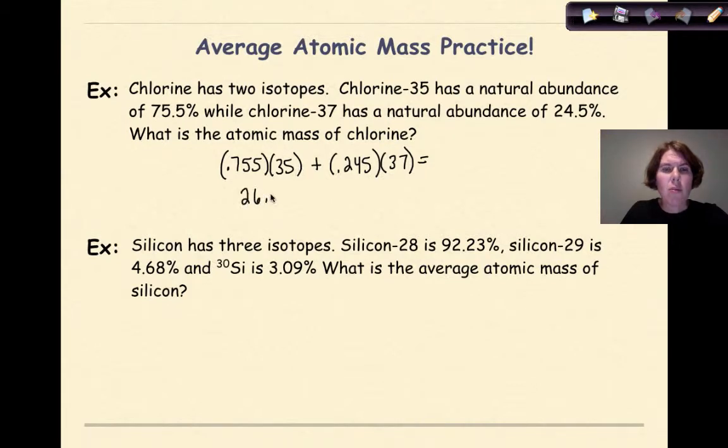So if I multiply together 0.755 times 35, I should get 26.425. And I'm going to add that to 0.245 multiplied by 37. And when I do that, I should get 9.065. So when I add these two numbers together, my final answer should be 35.49u. And you know what, if you're doing this, and you know that this is going to be the average atomic mass, which is listed on your periodic tables, you probably should check your periodic table and make sure that your mass is relatively close.